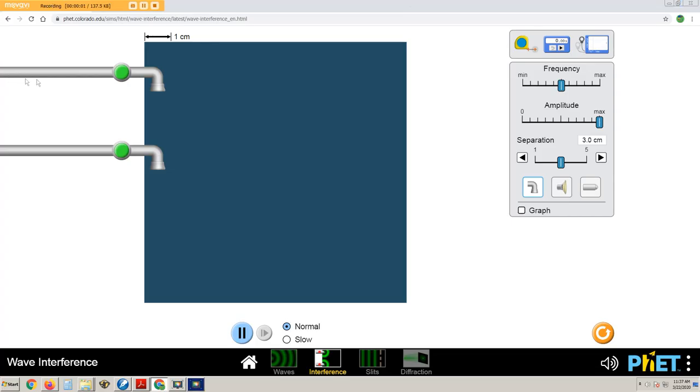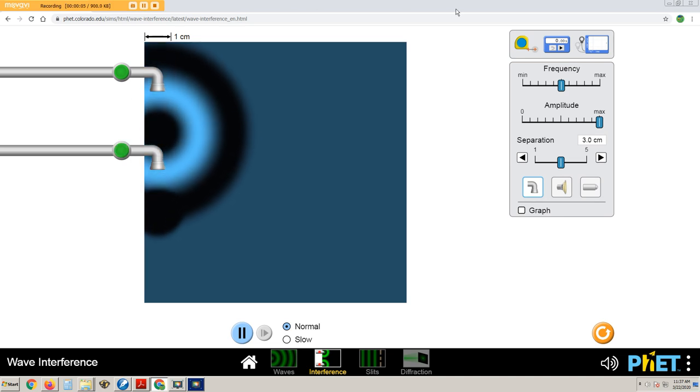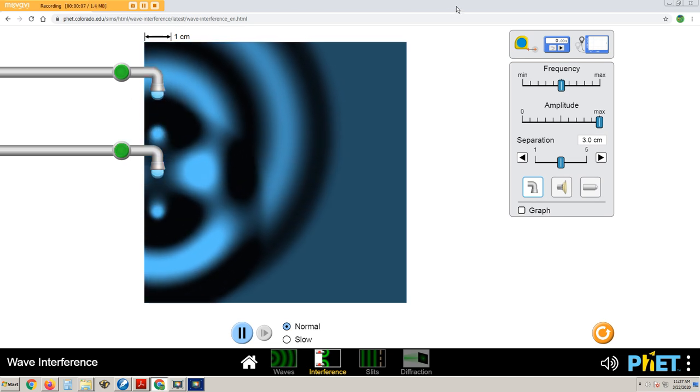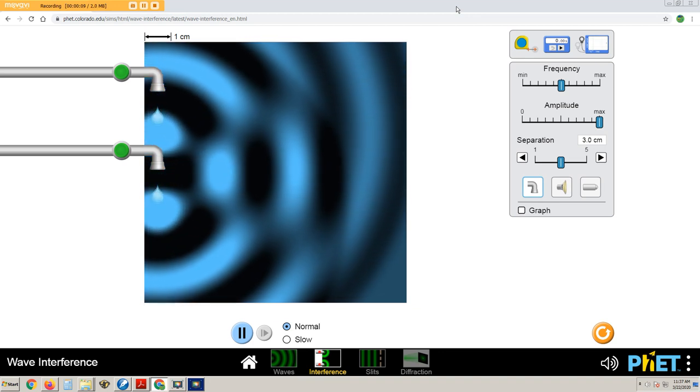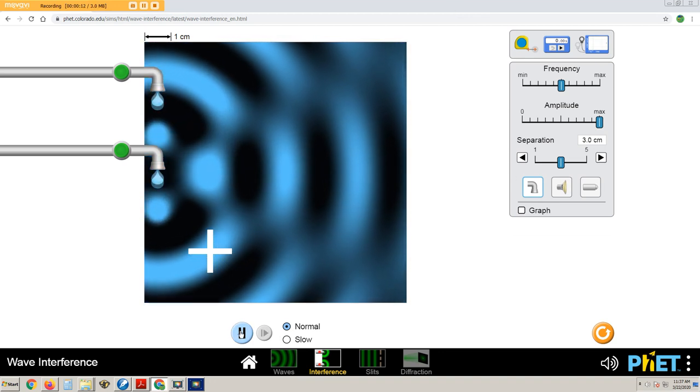The drips from these two faucets are hitting the surface of the water at the same time, so there is no phase difference in the outgoing waves. If we look at a particular location, there is a difference in distance to each of the two faucets. This path difference can make a phase difference.